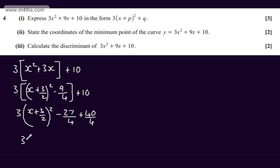So just tidying this up, we're going to have now 3 lots of x plus 3 over 2 all squared and then we'll have plus 13 over 4. So the value of p is positive 3 over 2 and the value of q is positive 13 over 4.